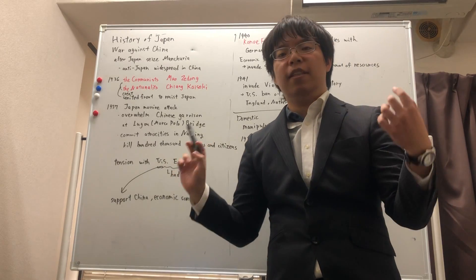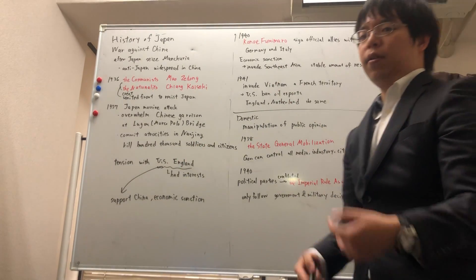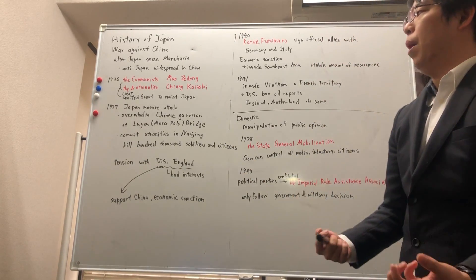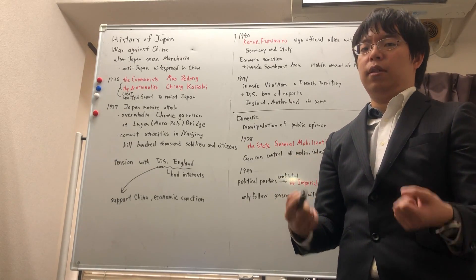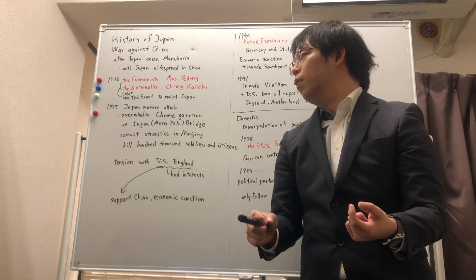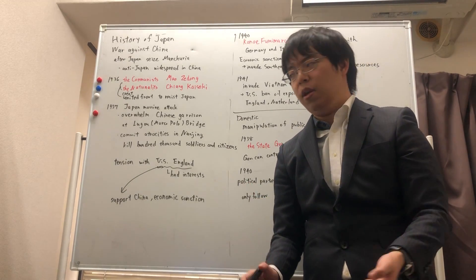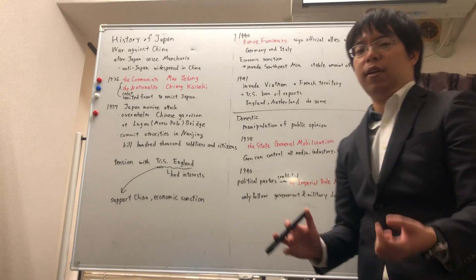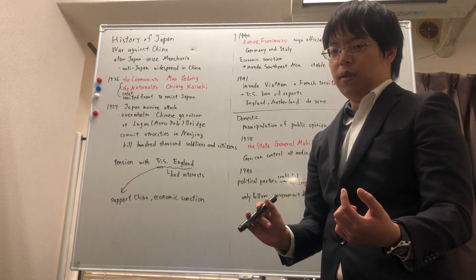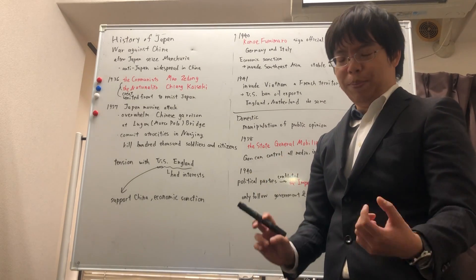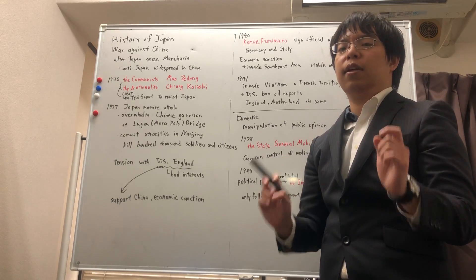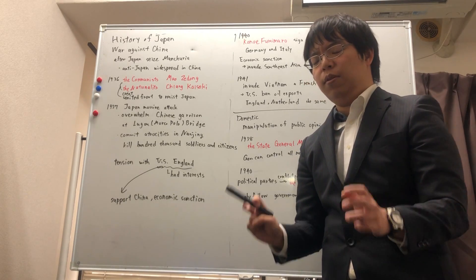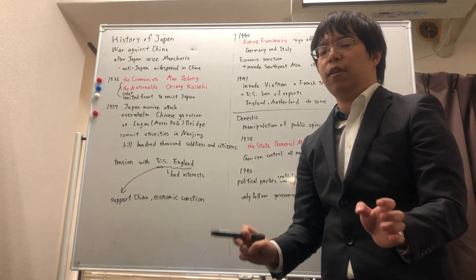In 1937, Japan committed a massive attack on China. Japan attacked the Chinese garrison at Lugou, the Marco Polo Bridge. And the Japanese military committed atrocities in Nanjing. It is reported that the Japanese military killed over 100,000 soldiers and innocent citizens.